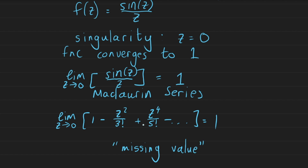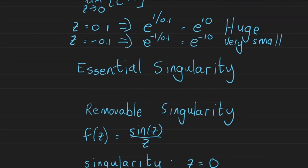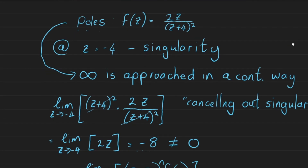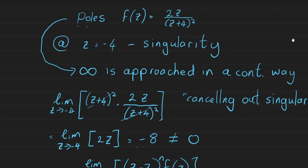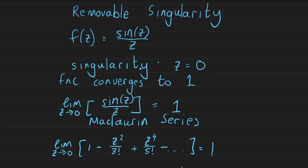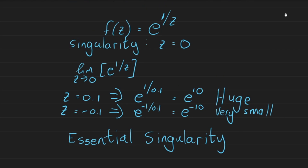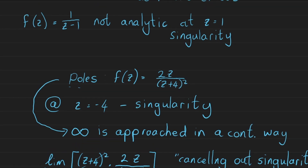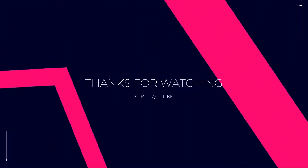We just put in that missing value by considering the limit as it approaches that singularity. In this video we've discussed three types of singularities. A pole is a singularity where the function approaches infinity in a controlled manner as z approaches the singular point. An essential singularity is where the function fluctuates wildly as z approaches the singularity. And a removable singularity is where the function just has a missing value at the singularity. These are the three most common kinds of singularities analyzed in complex analysis. Thank you very much for watching.